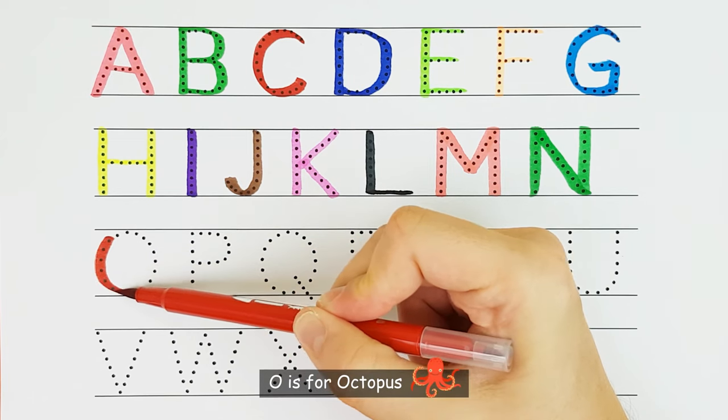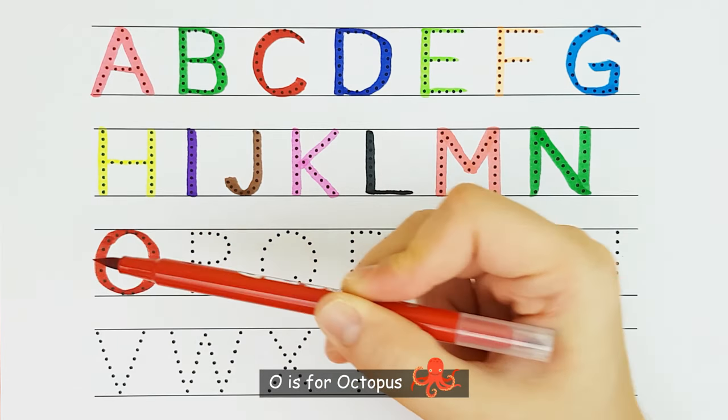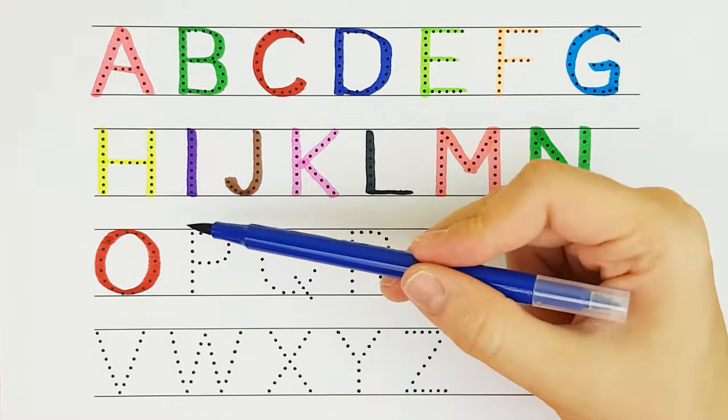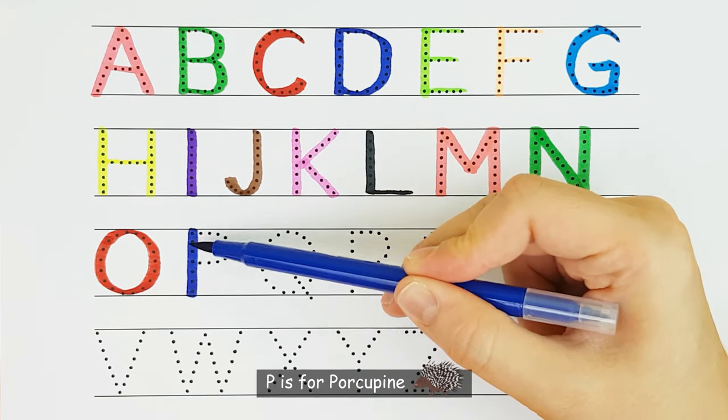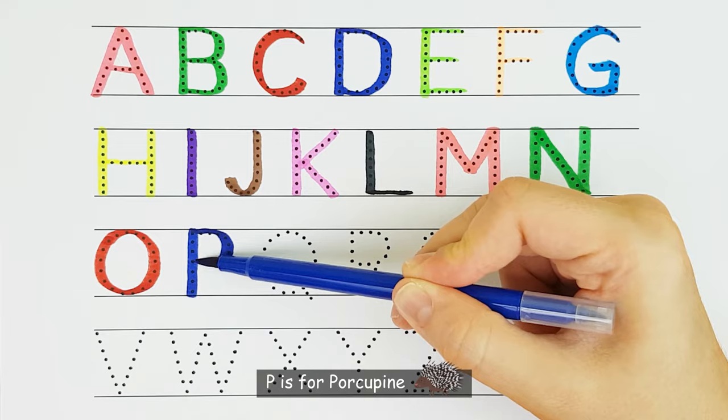O. O is for octopus. O. P. P is for porcupine. P.